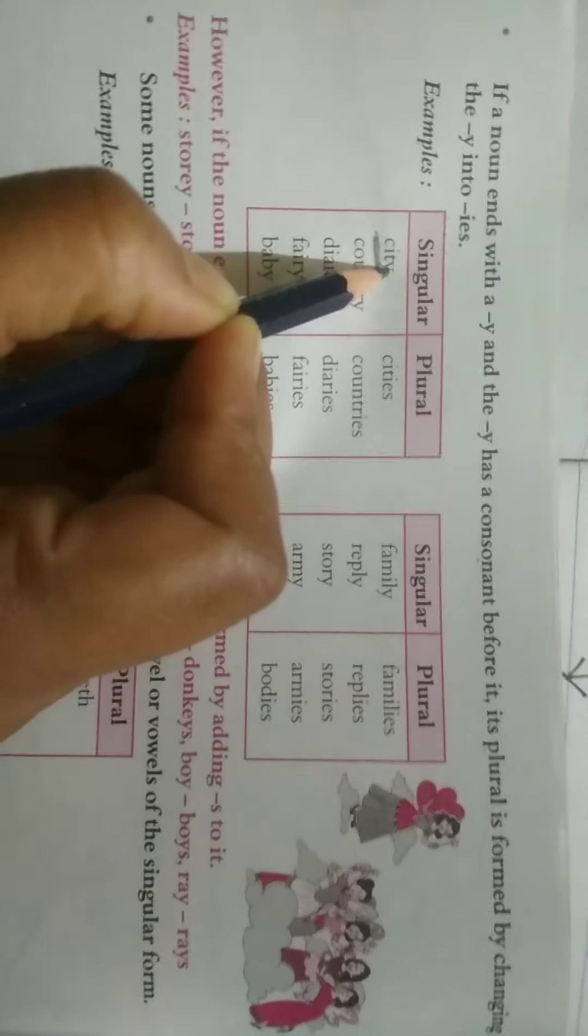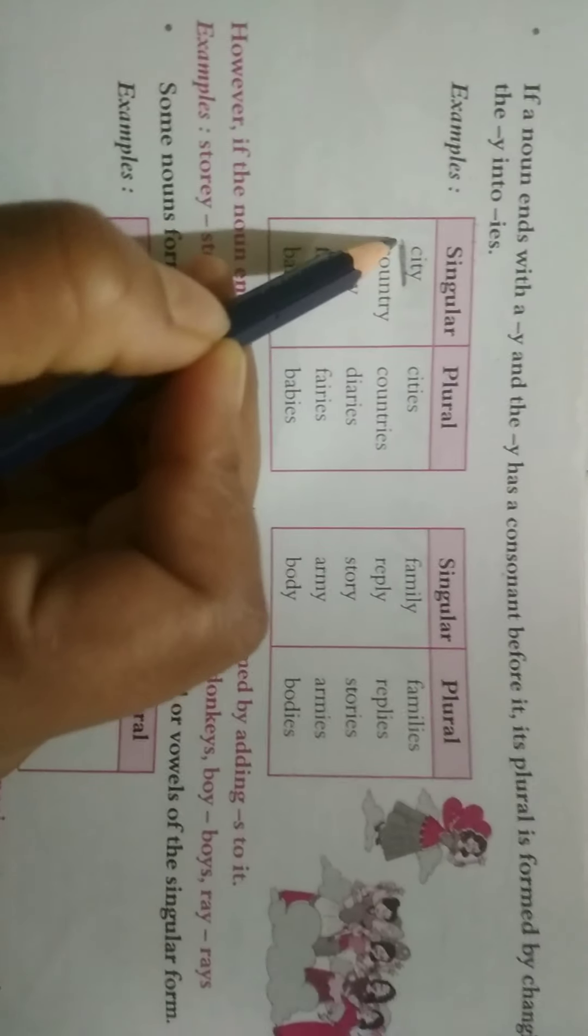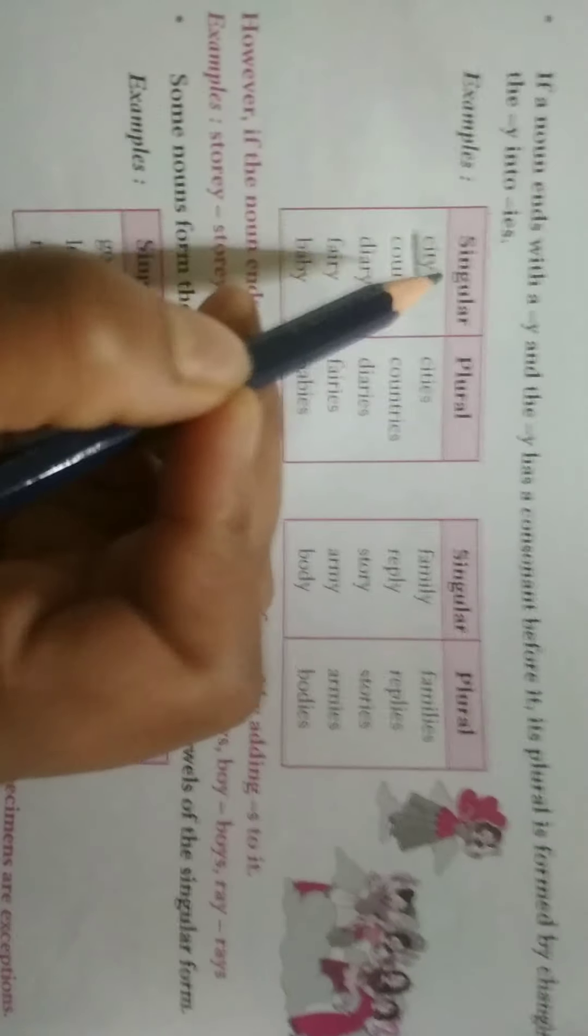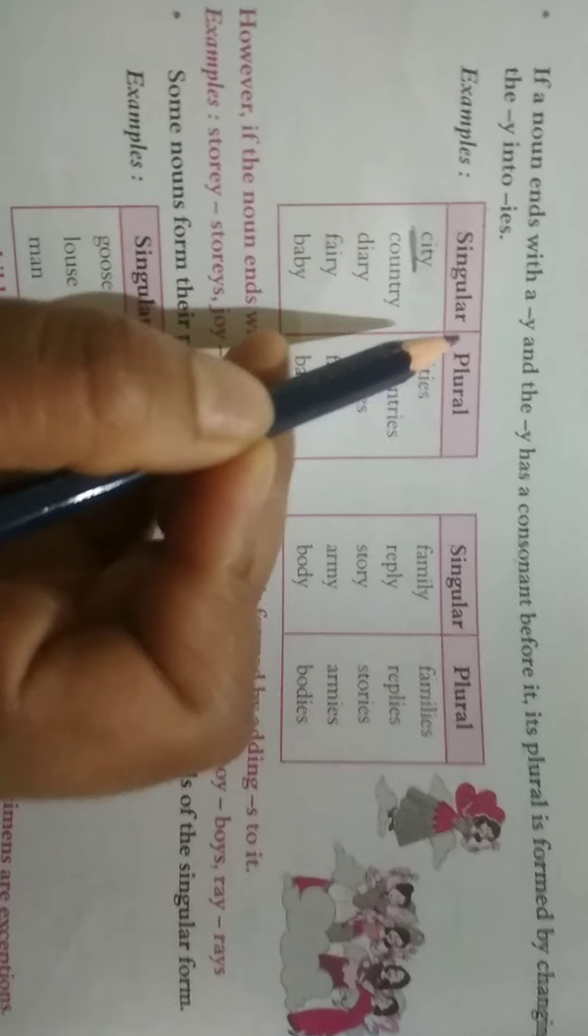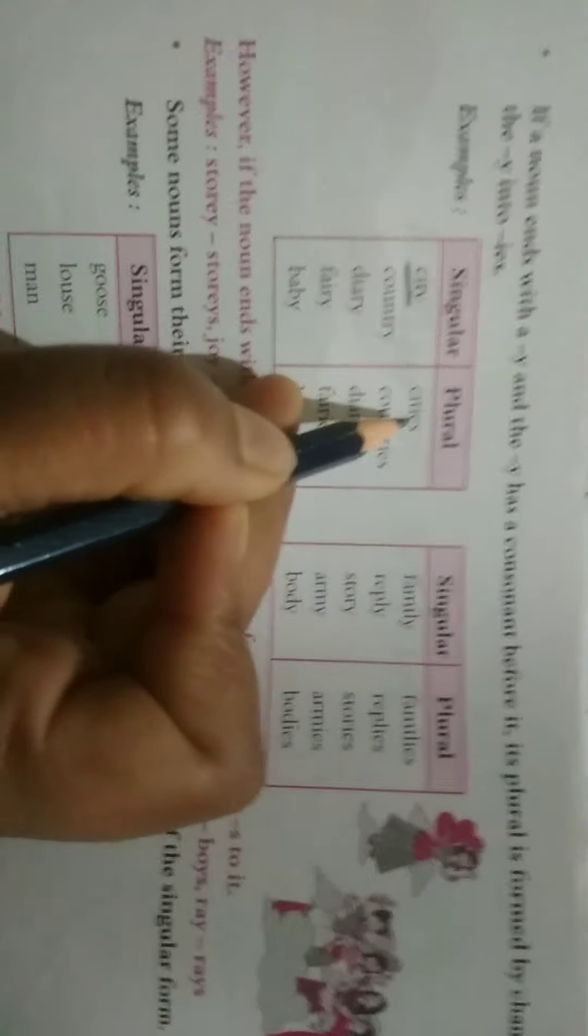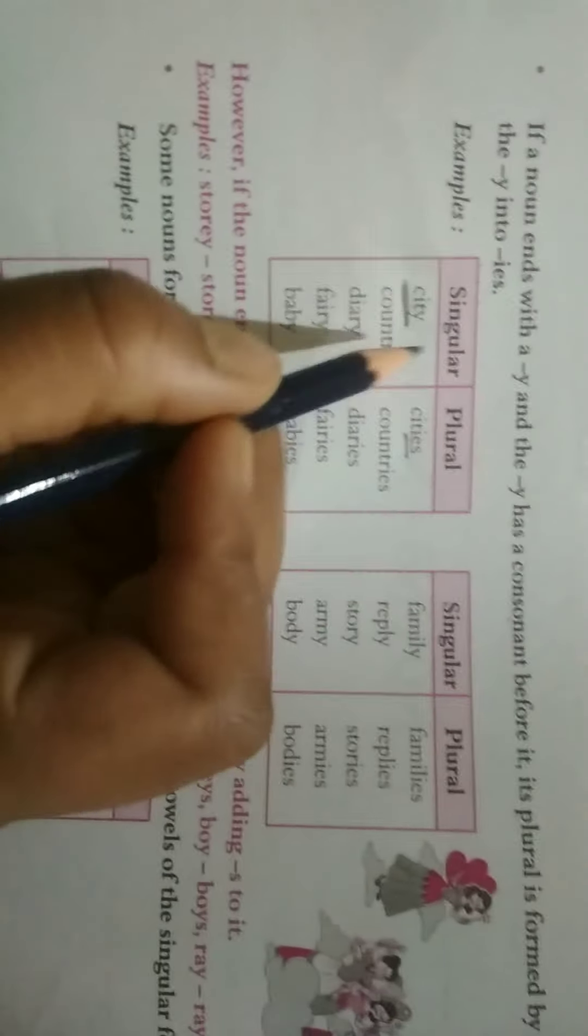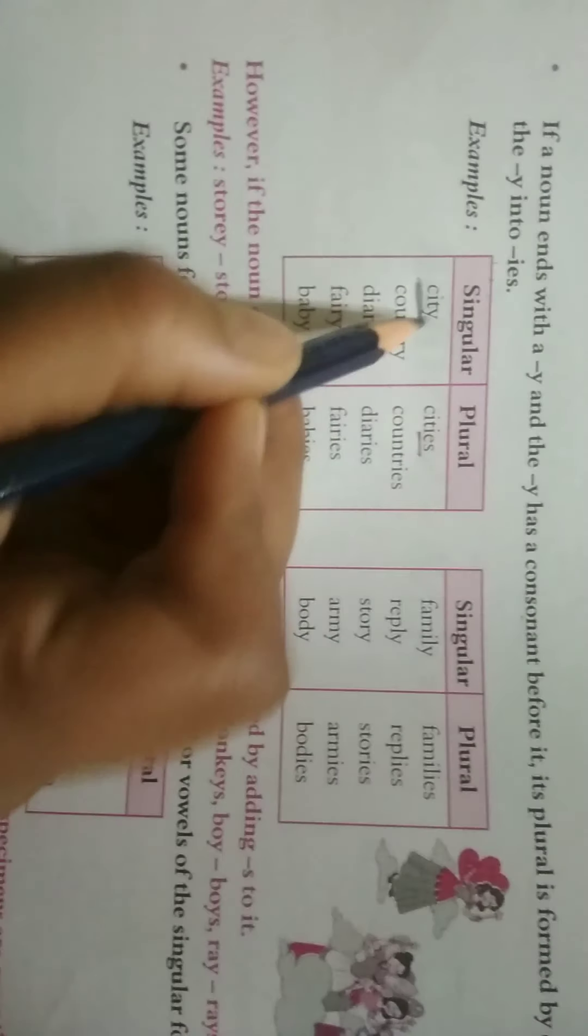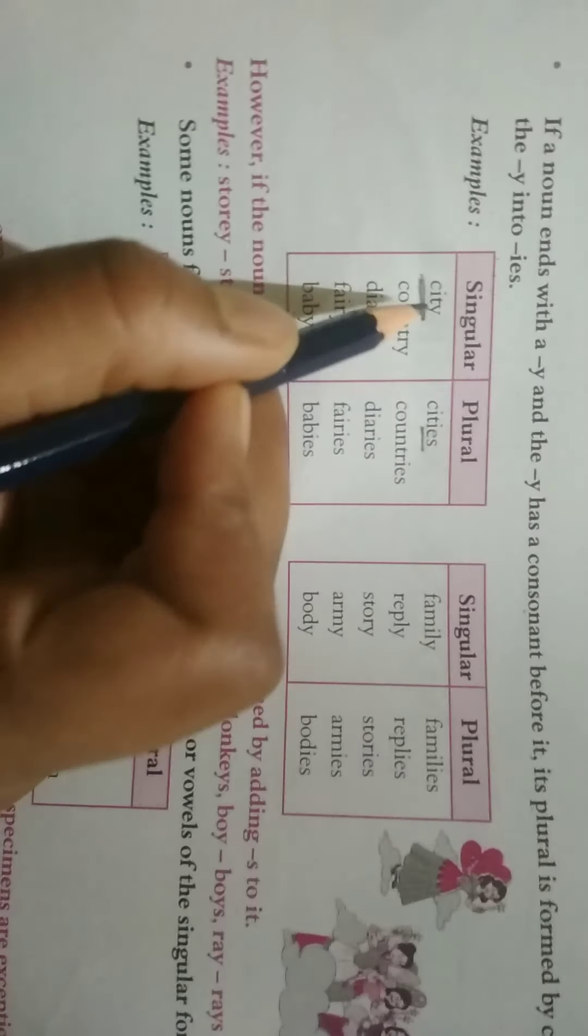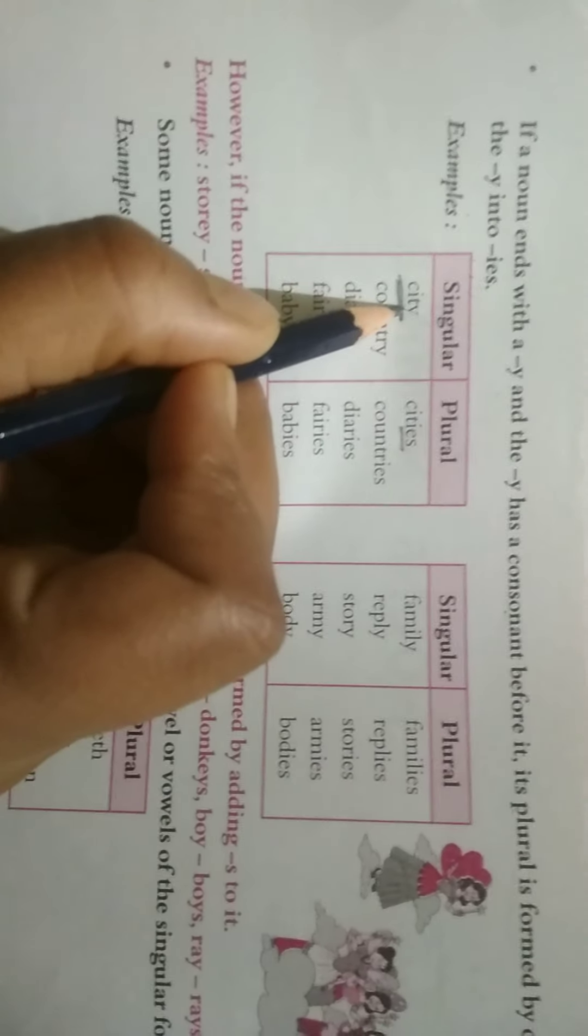It is a non-vowel sound. So if these type of words, if we find, then how will you convert it into plural form? You will convert it by adding I-E-S. If the noun ends with Y, here, this city, the word city is ending with which letter Y and Y is a consonant. Got it?